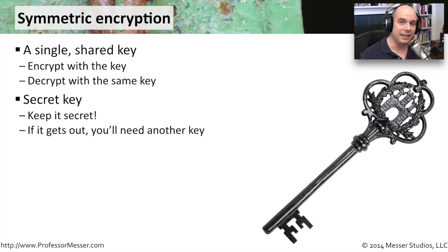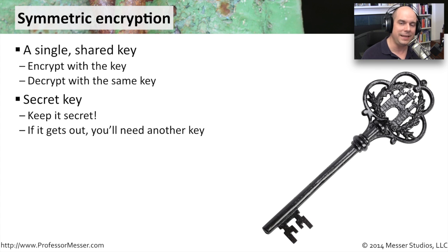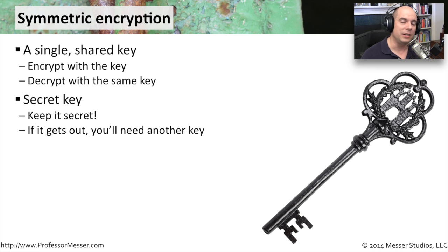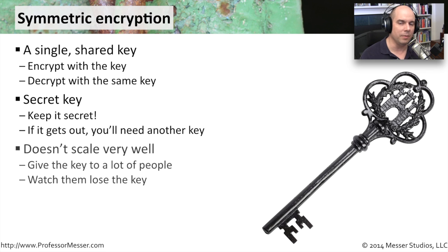Because it is exactly the same key on both sides, you have to keep it secret. If somebody was to get that key somewhere in the middle, they would be able to look at all of the information that we had encrypted — they'd be able to see everything. And that means if the key gets out, is lost, or is stolen, you're going to need to create another secret key and get that secret key to the person receiving the encrypted information.